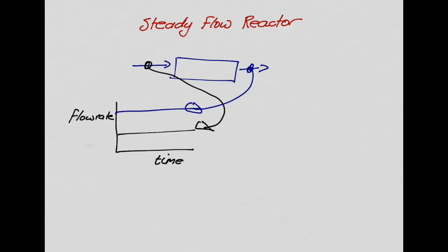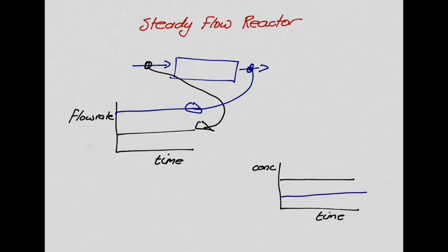Consider another property like concentration. At the inlet point, concentration would be constant and not change with time. At the exit the concentration of that same species would again be constant but different from the inlet. At some point inside the reactor, concentration is constant but different from either inlet or outlet. The key point: in a steady flow reactor, properties such as concentration, flow rate, temperature, and pressure do not change with time but can change with position.